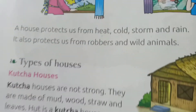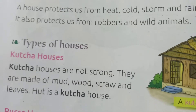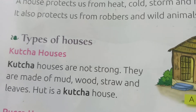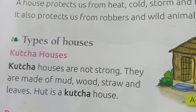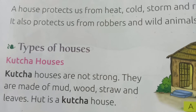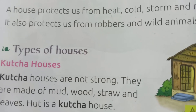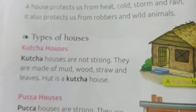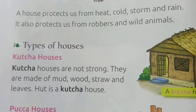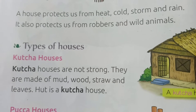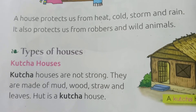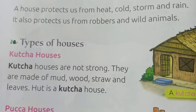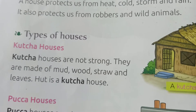Early humans did not have any home. They used to live in caves and on trees. Later, they started to build homes with the help of wood, straws, stones and mud, etc. Today, humans live in different kinds of houses.